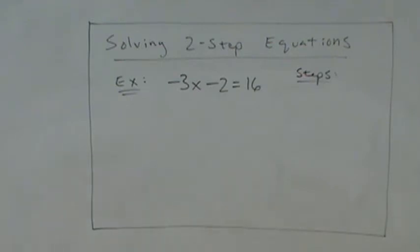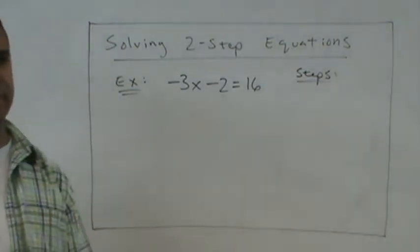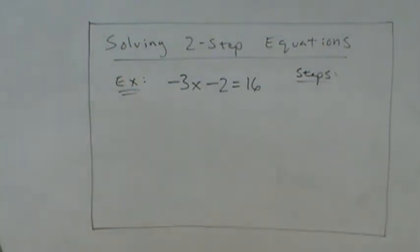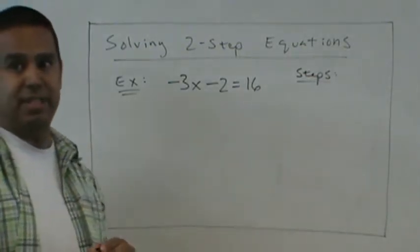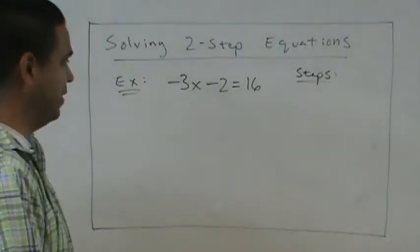All right. Time is up. Check with your partner what the answer is. See if you agree. What'd you get? Negative 6. I'm hearing negative 6. Let's check.